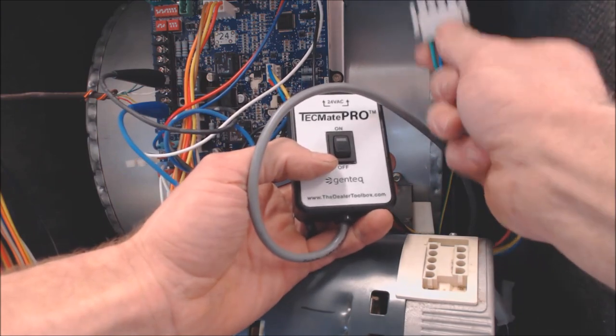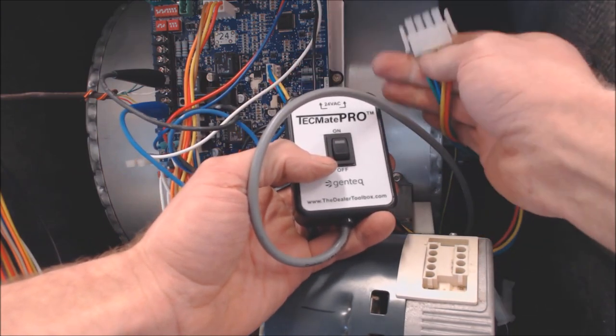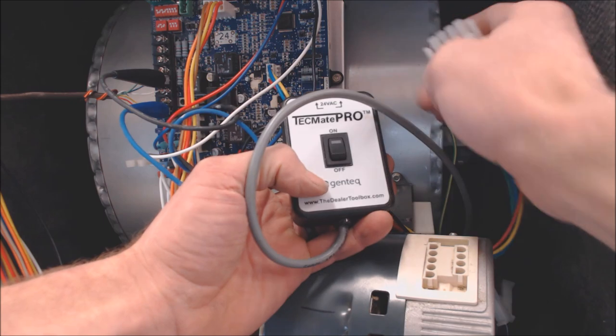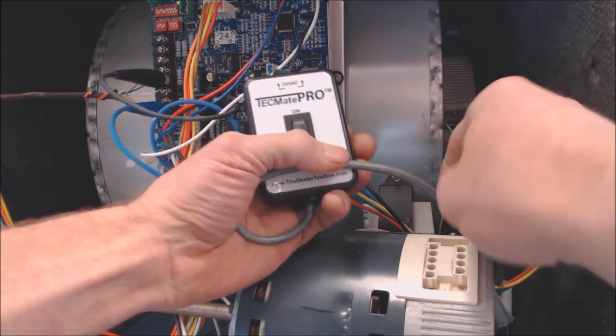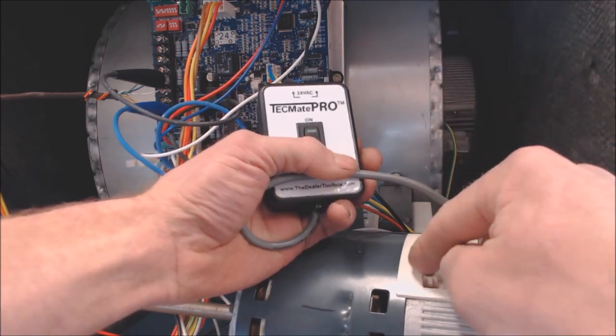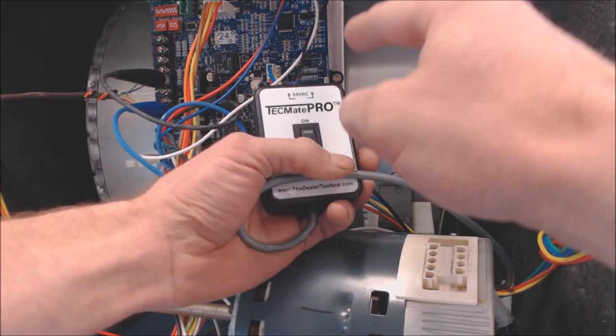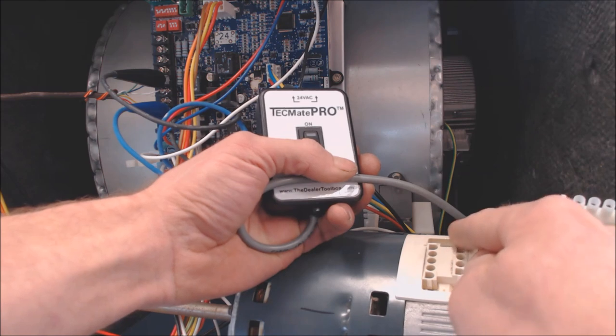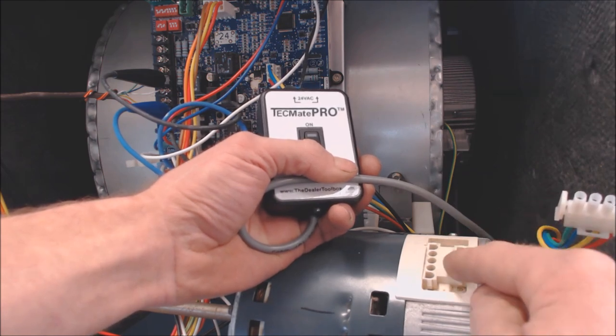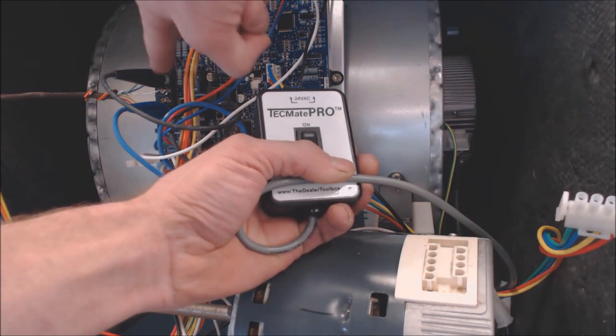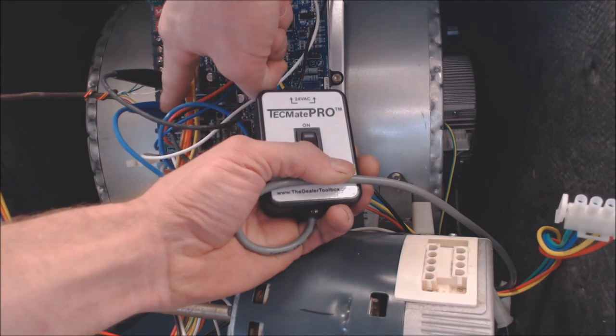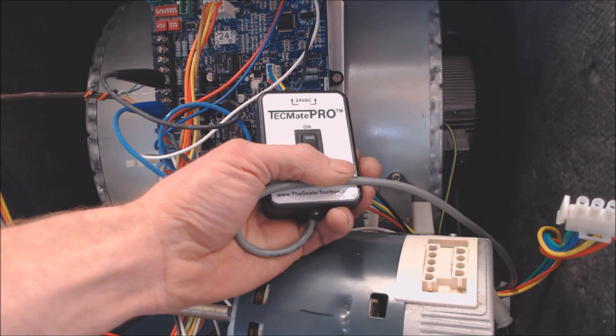So presently, we have our connection from the board disconnected to the variable speed blower motor. We have the 120 volt power wire, which would be the ones connected right here. That's still connected onto the blower motor. So we have the TechMate Pro plugged into the second set of pins, which is the four pins. We have one connection on common, one connection on 24 volt hot. And now we're going to go ahead and turn the furnace on.